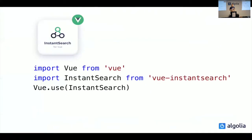Vue InstantSearch is simply InstantSearch tailored for Vue. Here you can see a few lines of code — this is simply the way we instantiate the plugin and tell Vue to use it. This is actually all you need to start using Vue InstantSearch in your Vue application. With this code, it will register all the components we make available and you can start using them in your template.